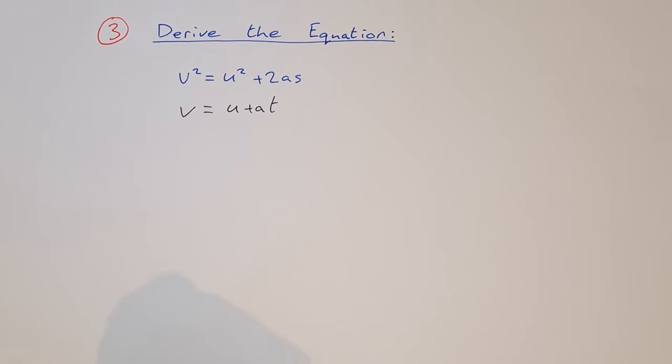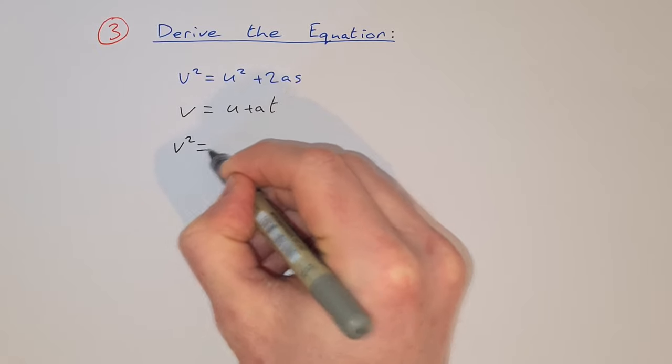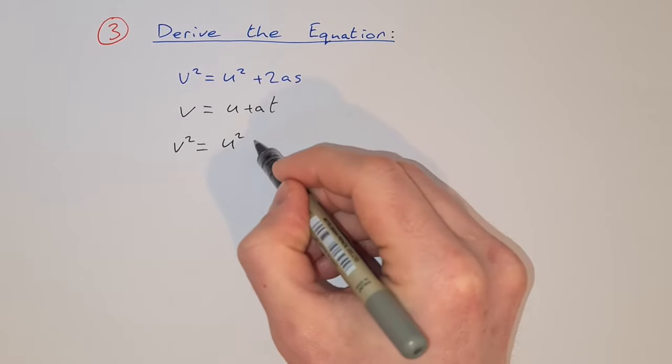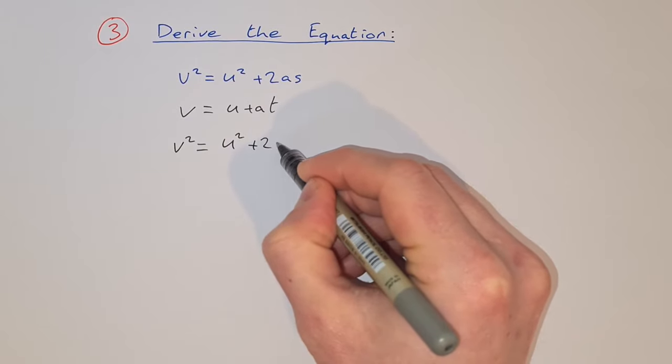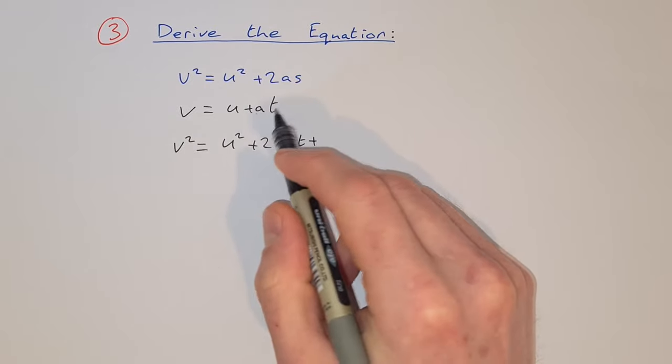And what we're going to do now is we're going to square both sides. So that would be v squared is equal to, and squaring this side, we get u squared plus twice the product. So that's plus 2uat plus a squared t squared.